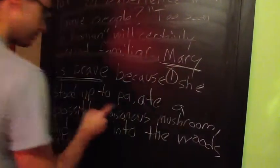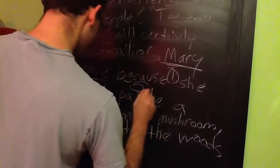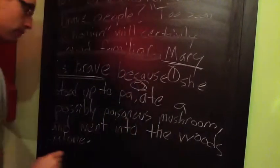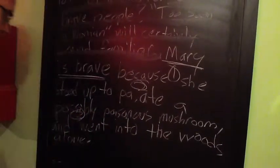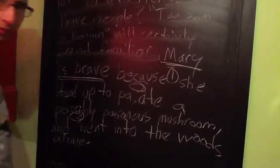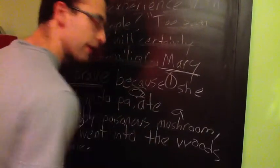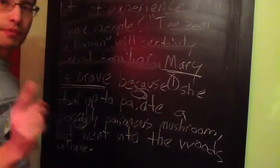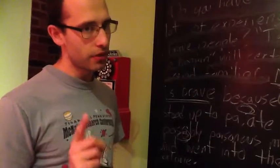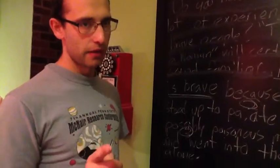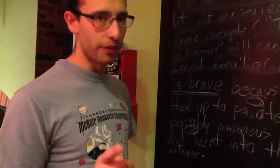One reason: she stood up to Pa. Second reason: she ate a possibly poisonous mushroom. And third reason: she went into the woods alone. We know to look for those. I'm going to give you one example of a body paragraph and a conclusion, and I'll show you how it breaks down in a moment.